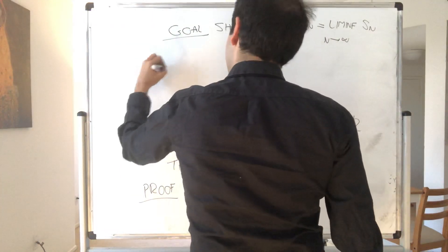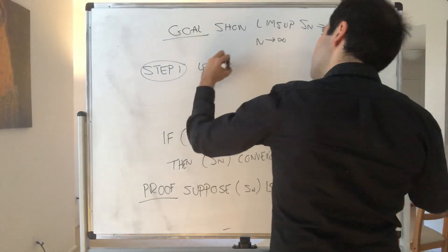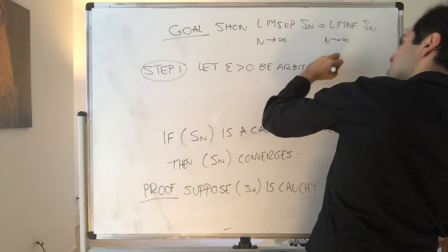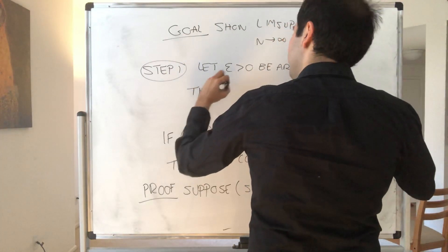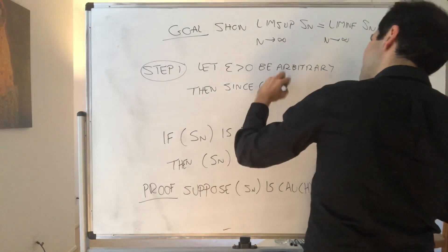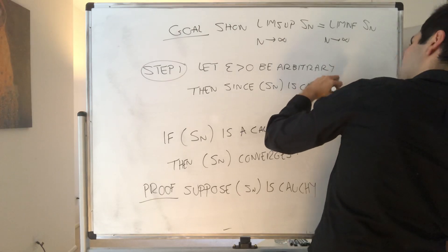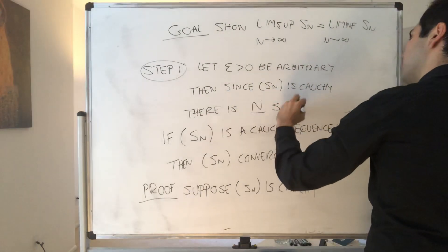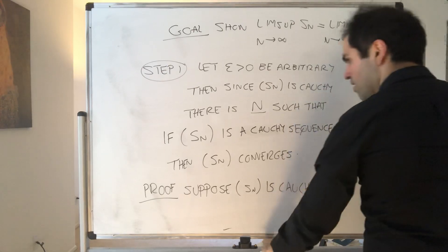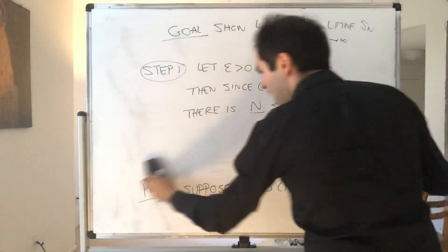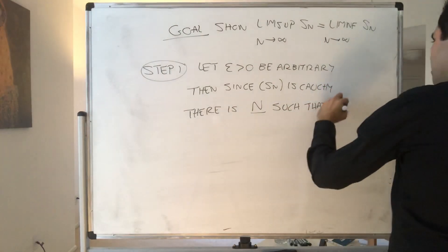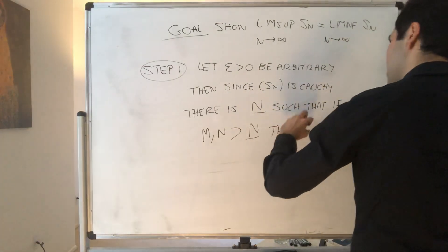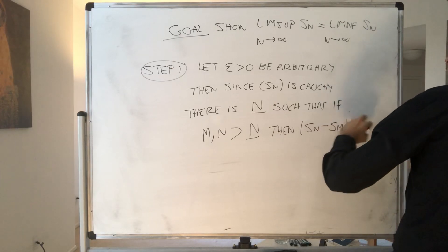Now, step one. Let ε be arbitrary. Then, since Sn is Cauchy, what does that mean? It means there is some threshold. So there is capital N such that for any value bigger than capital M—such that if M and N are bigger than capital N, then |Sn - Sm| < ε.